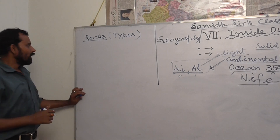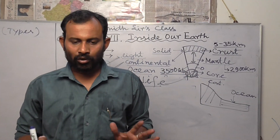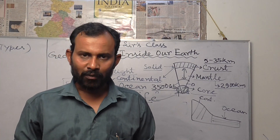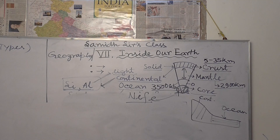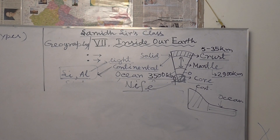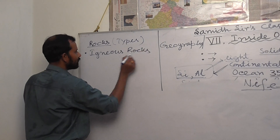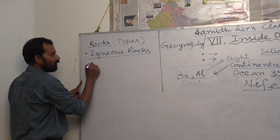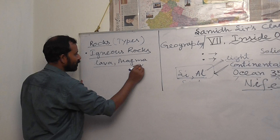There are three types of rocks: igneous rocks, sedimentary rocks, and metamorphic rocks. Igneous rocks are made by volcanic eruption — lava and magma are related with the formation of igneous rock.